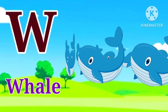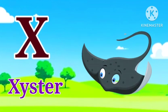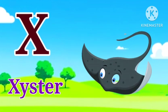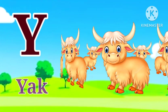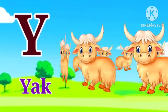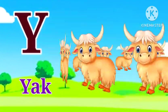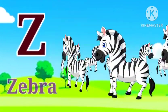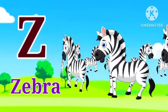W for whale, whale means whale. X for ekster, ekster means ekster. Y for yak, yak means suragai. Z for zebra, zebra means zebra.